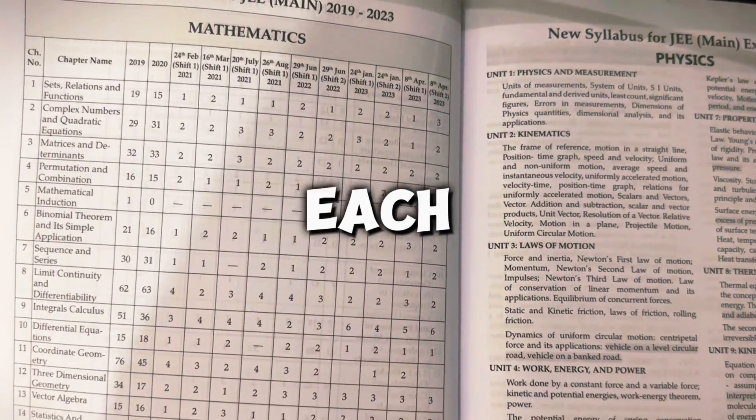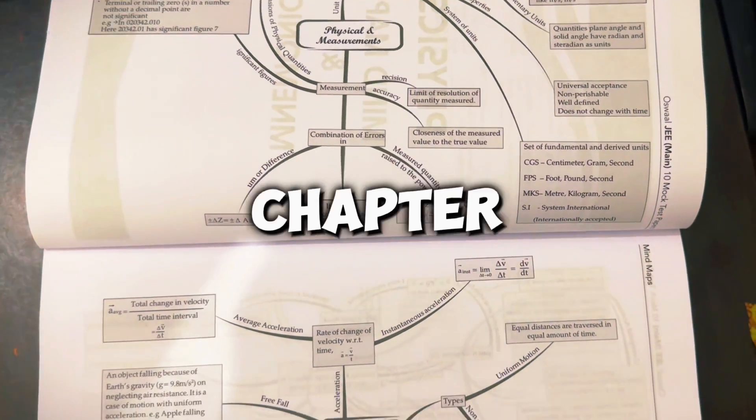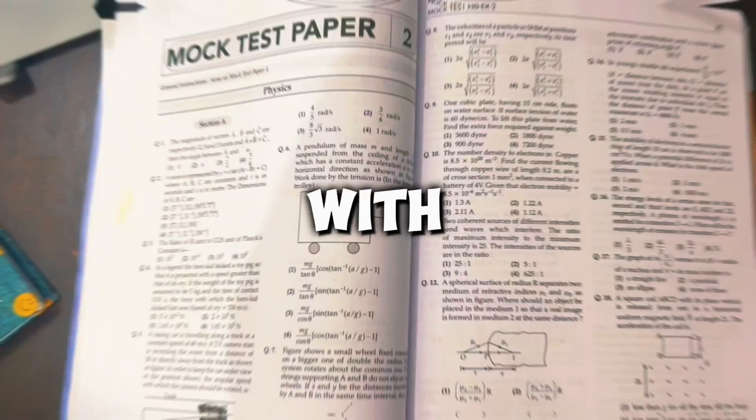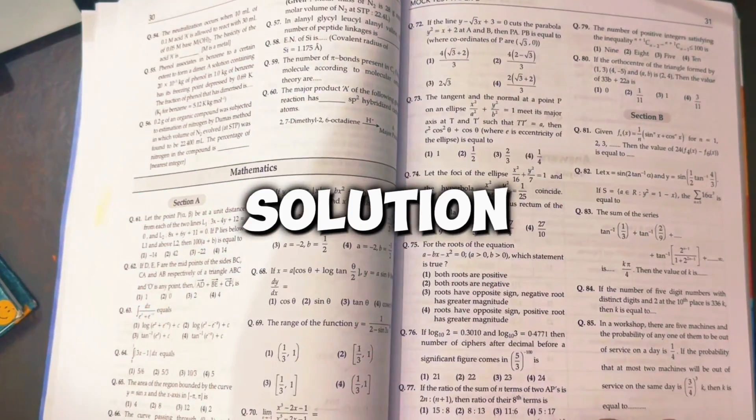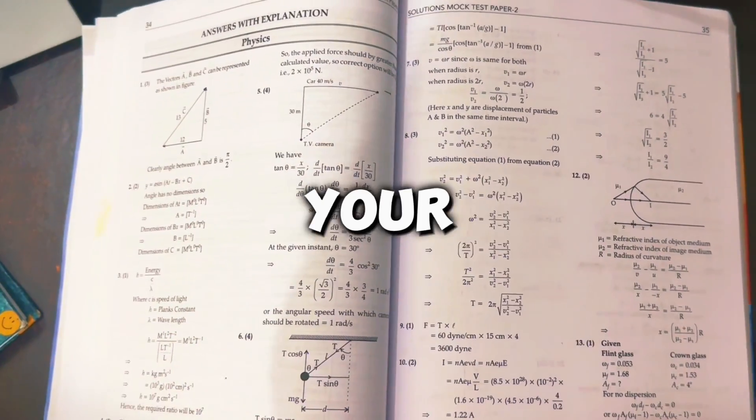In this book, you get detailed analysis of each subject and mind map for every chapter for 10 minutes quick revision. Along with this, it contains 10 mock test papers with their 100% detailed solution which will definitely increase your score and your speed.